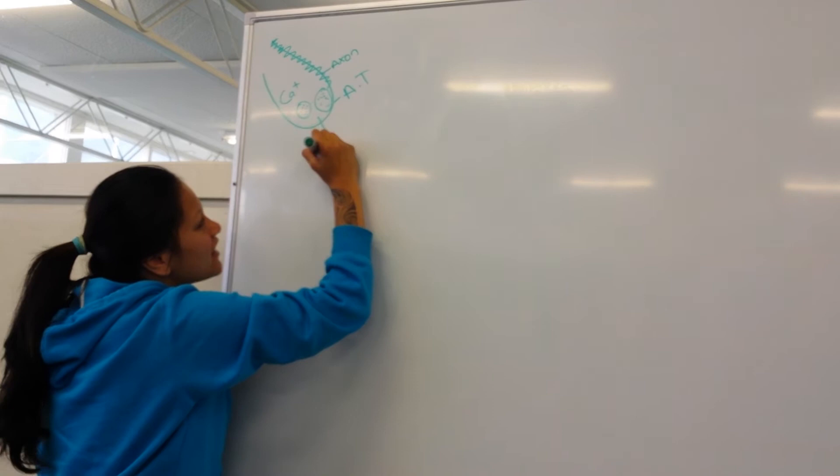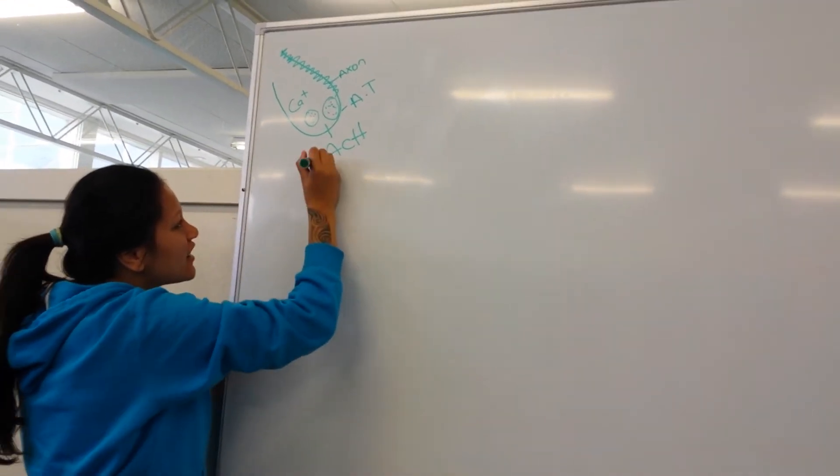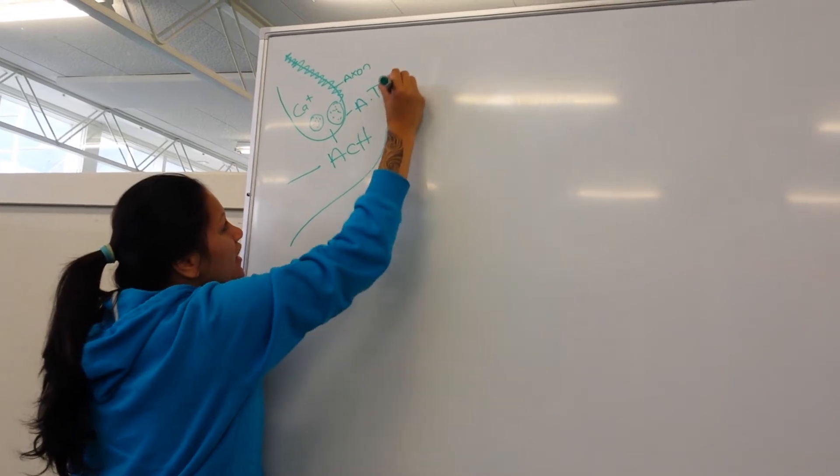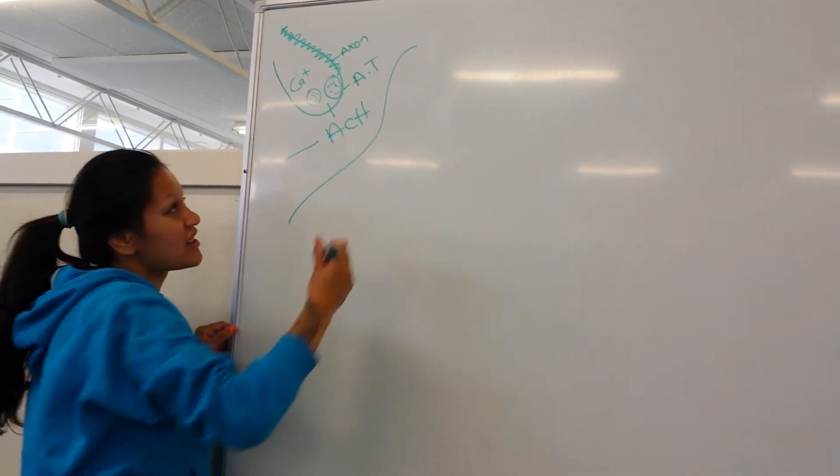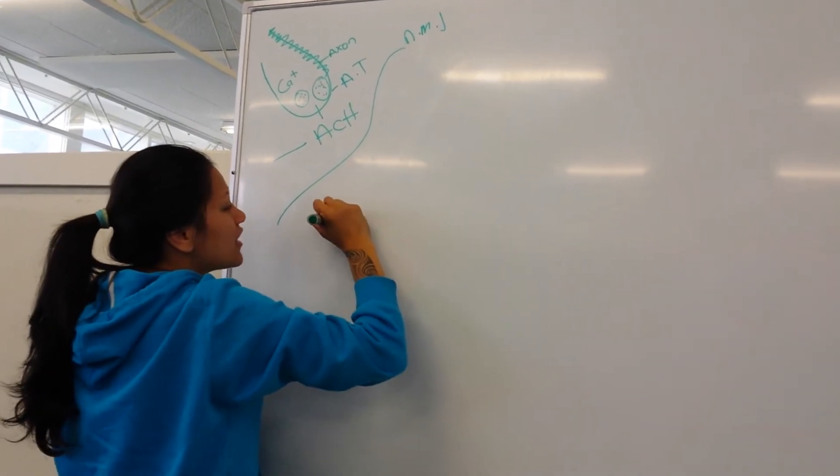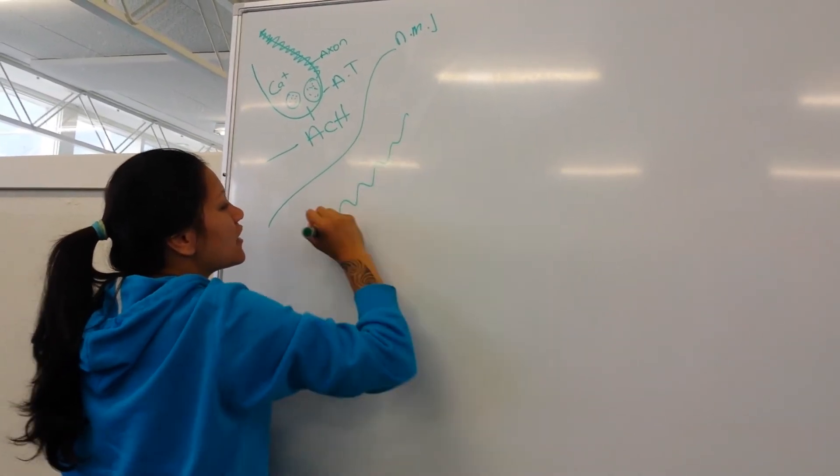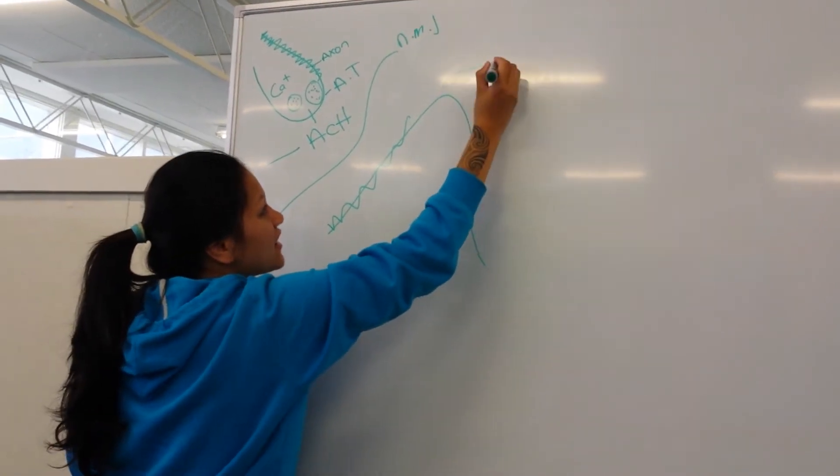Then ACH is released, which is a neurotransmitter, and it goes across the neuromuscular junction. A new action potential starts on the sarcolemma and then it travels down the t-tubules.